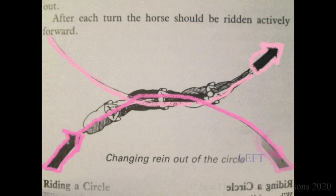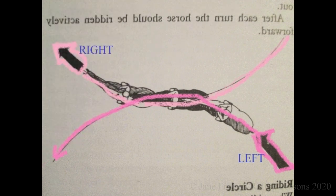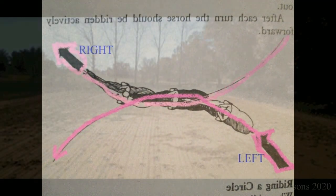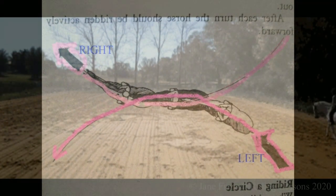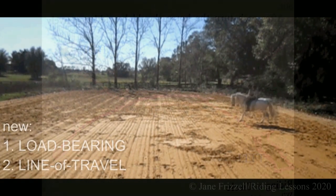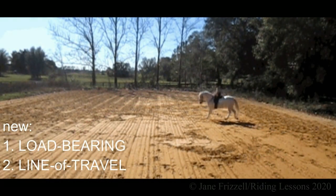In changes of rein, we ride from curved line to curved line, right to left or left to right. A change of rein is a complete and instantaneous inversion of the equilibrium and mechanism of the horse's load-bearing and his line of travel.